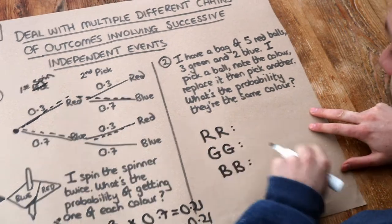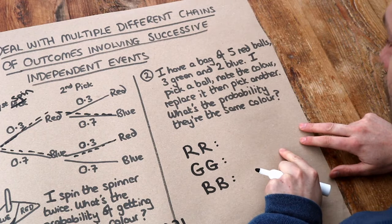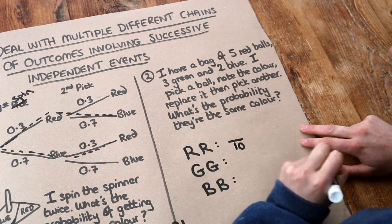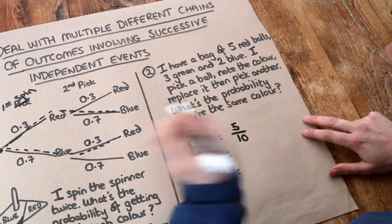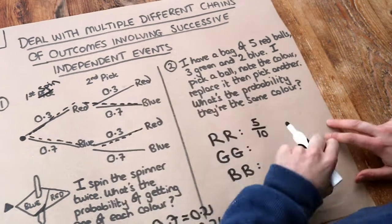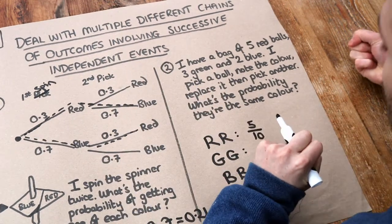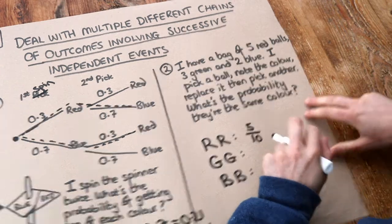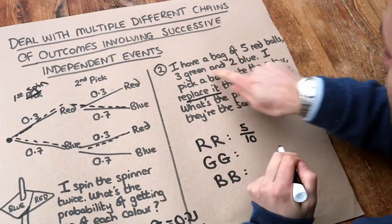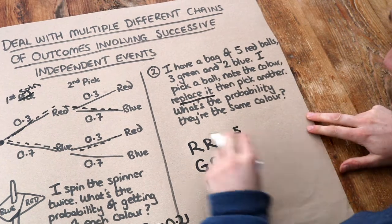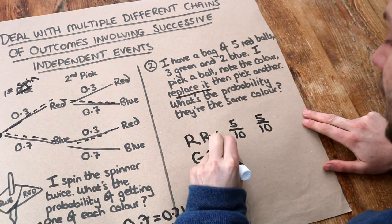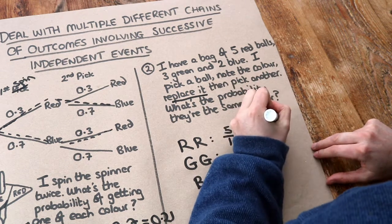Let's work out the probability of getting red and red first. The probability of getting red on the first pick — we've got ten balls in total (five plus three plus two), and five are red, so it's five out of ten. Then what's the probability of getting red on the second pick? These are independent events, meaning the probabilities on the second pick aren't affected by the first pick because we replaced the ball. So we still have five red, three green, two blue — the probability of red is still five tenths. We multiply to get 25 over 100.